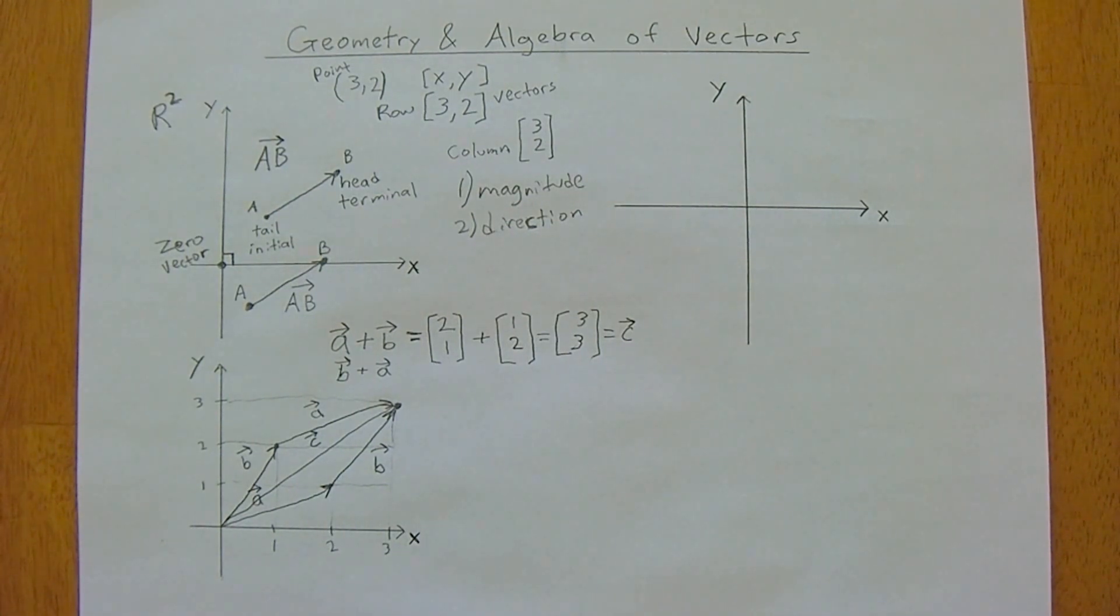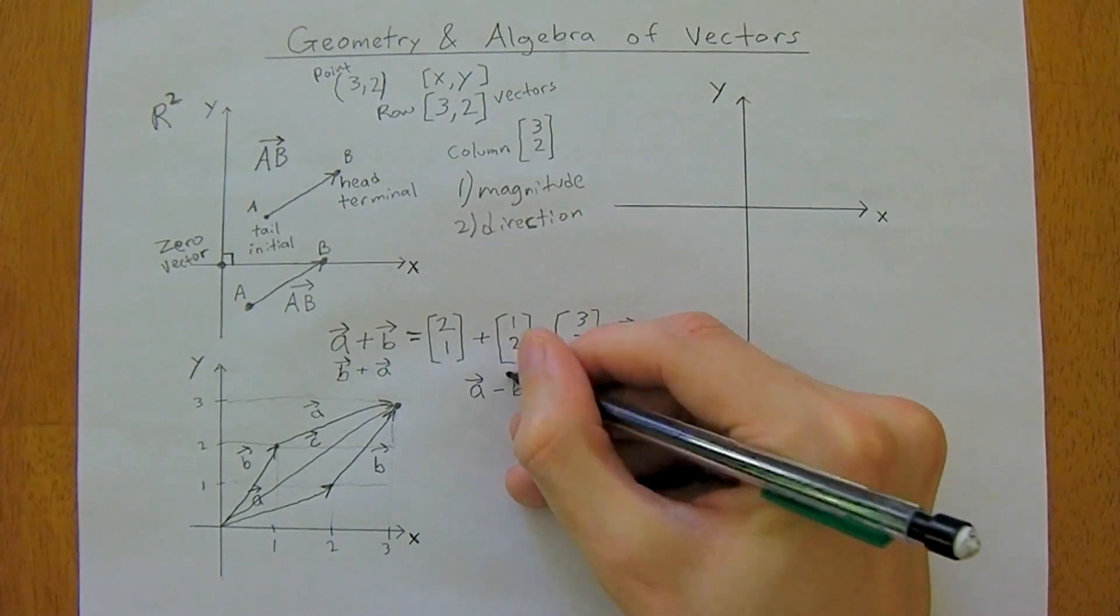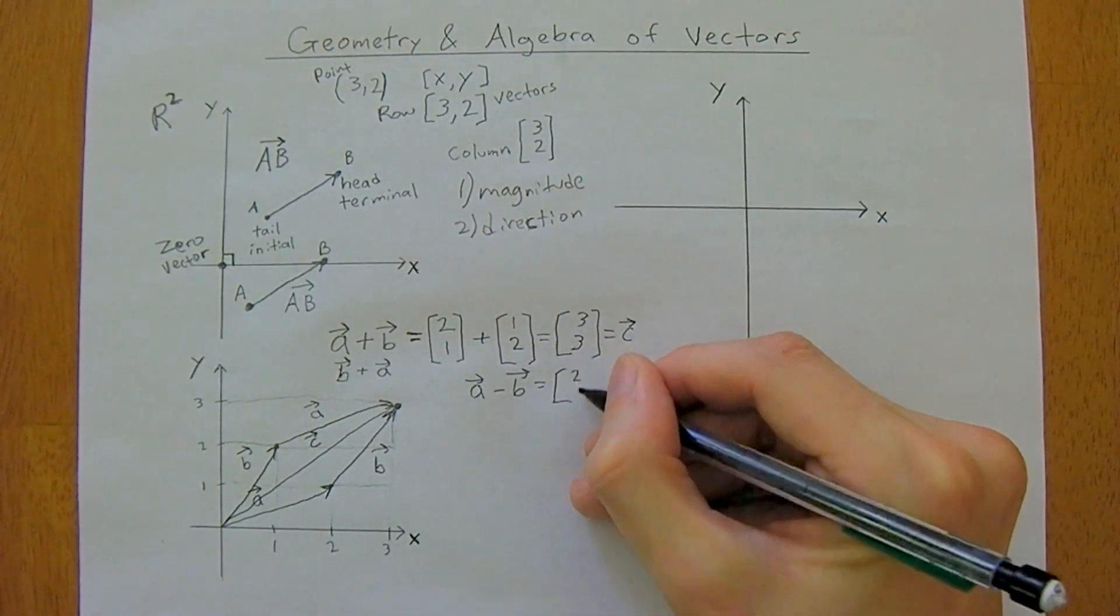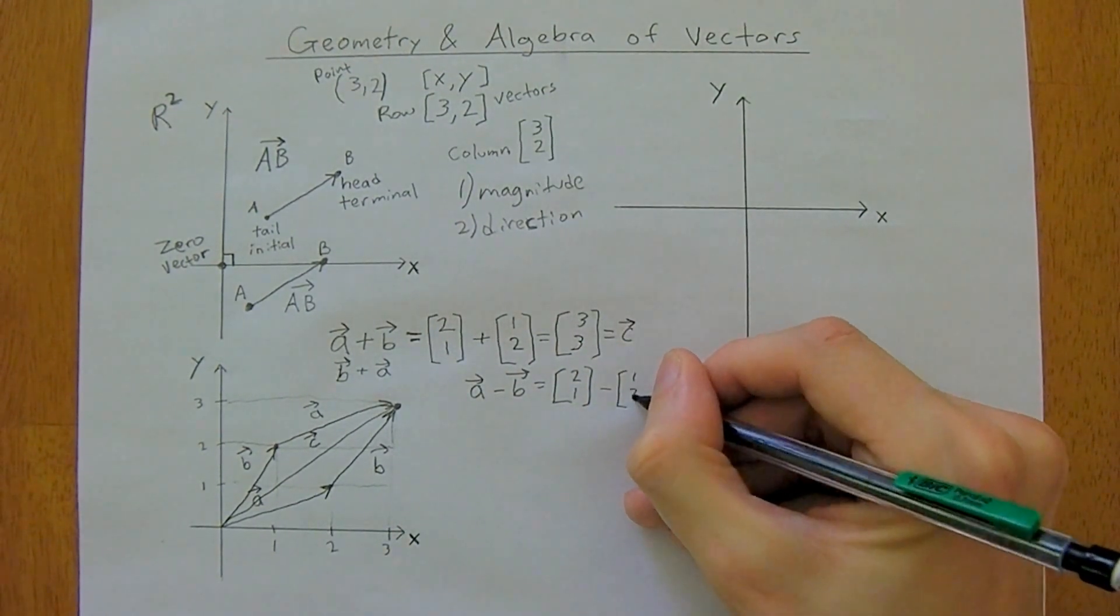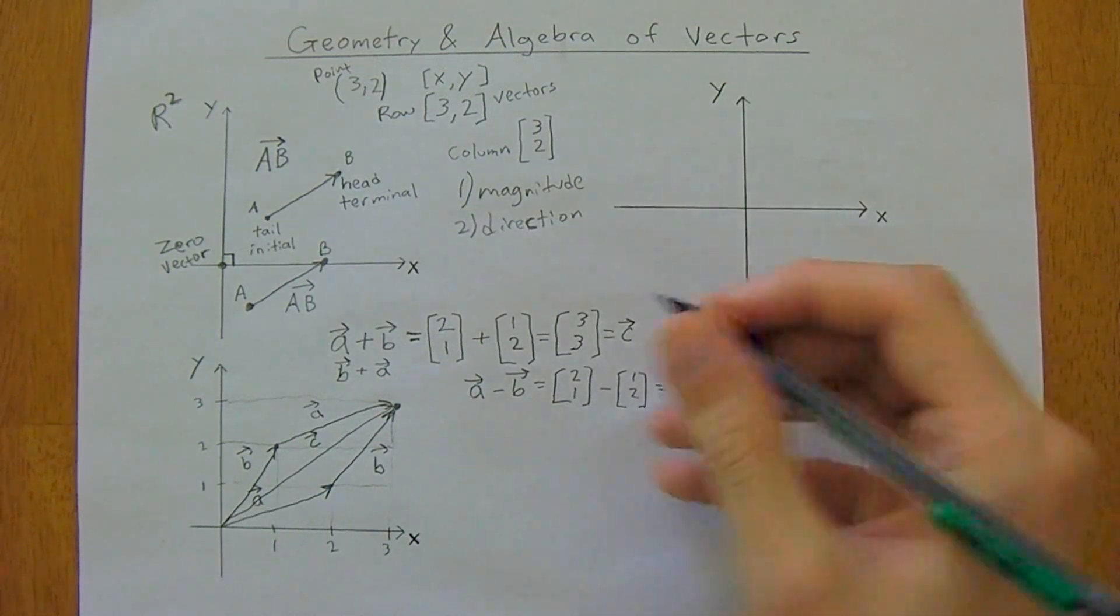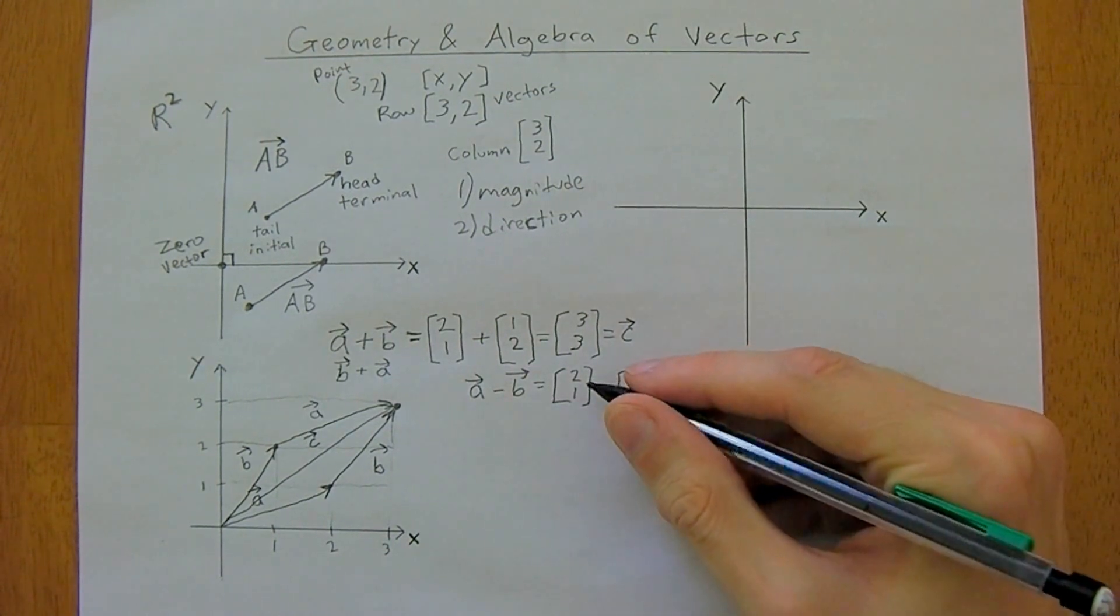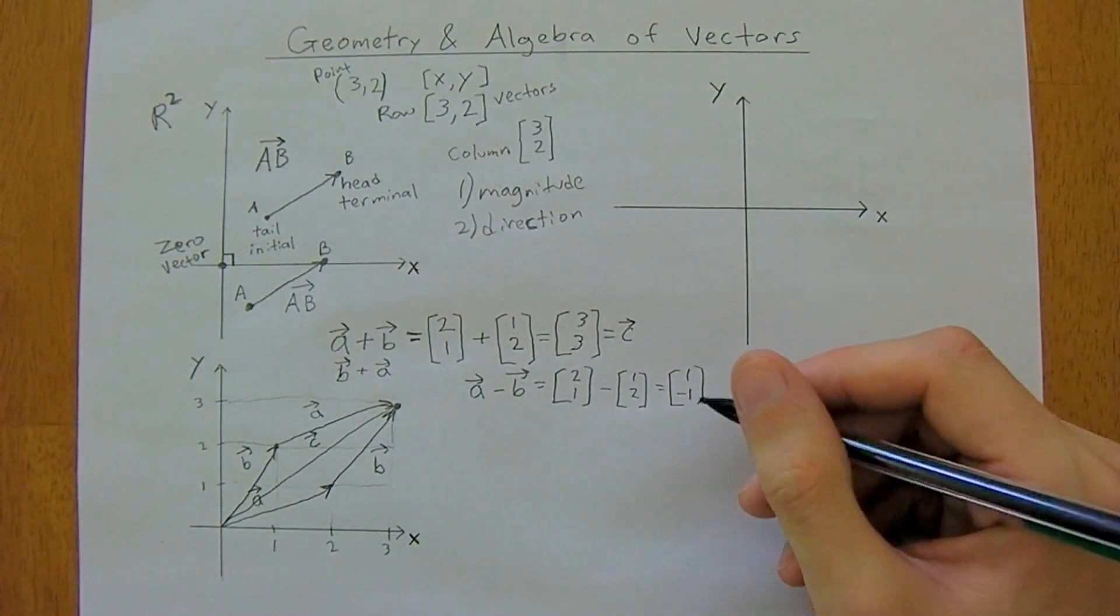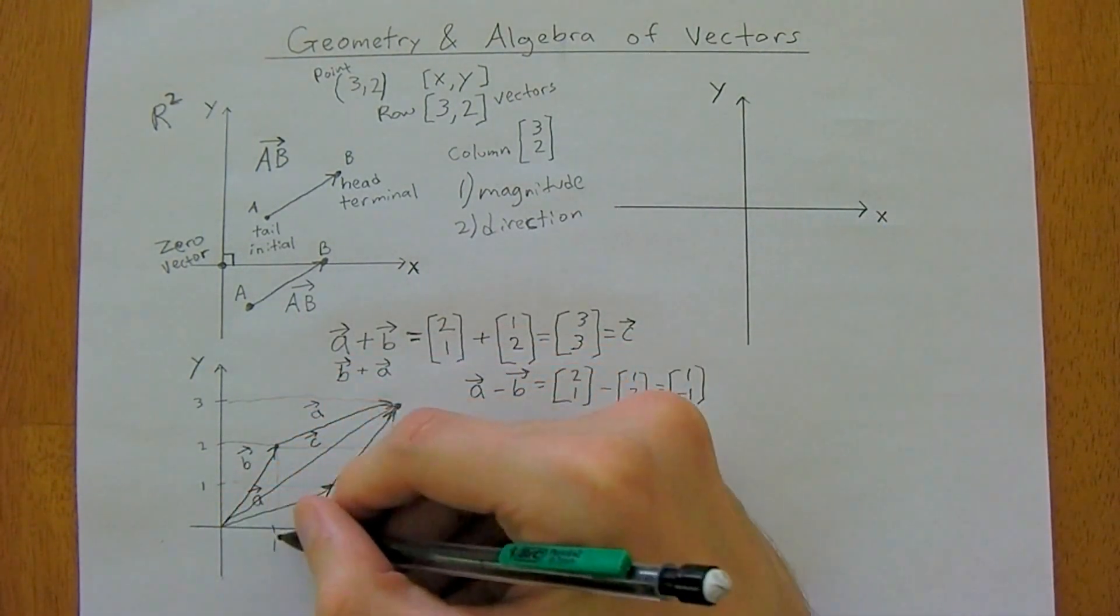Subtracting, you do pretty much the exact same thing. So a minus b would give you, using column vectors, [2, 1] minus [1, 2]. Work with the components again, so 2 minus 1 is 1, 1 minus 2 is negative 1.